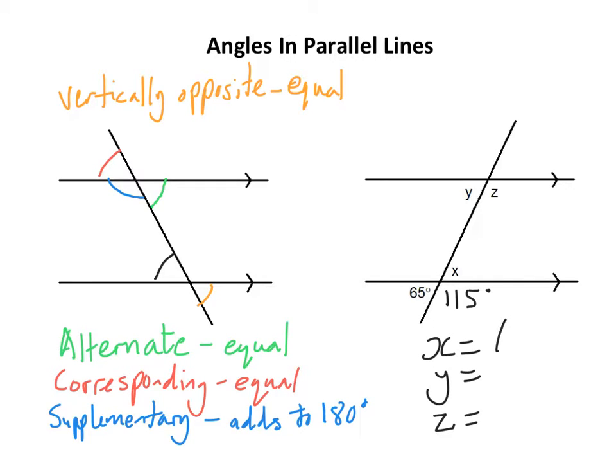So looking at them, x would be 65, and that if I had to give a reason would be vertically opposite the 65. Y would also be 65, and that would be, if I had to give a reason, corresponding.